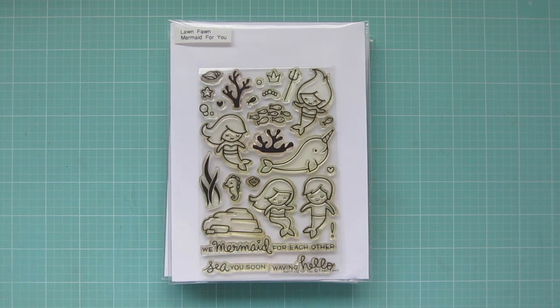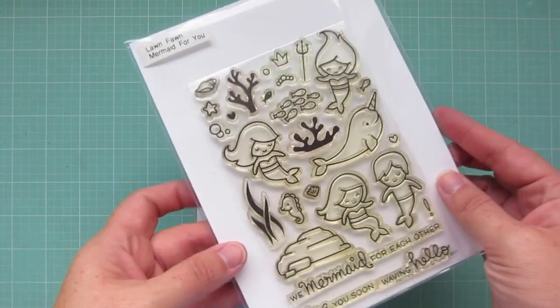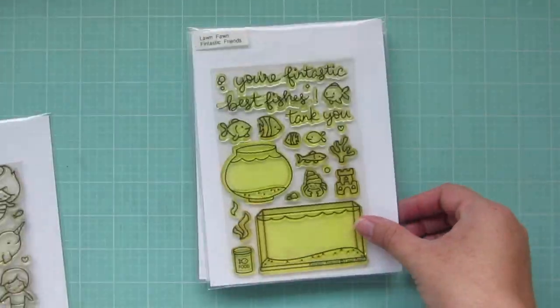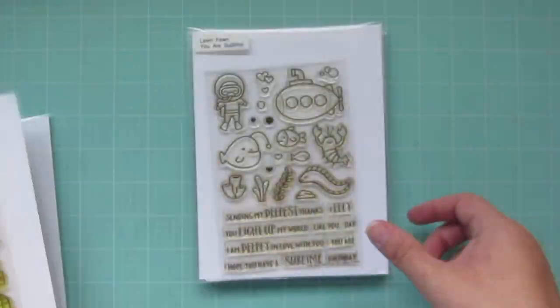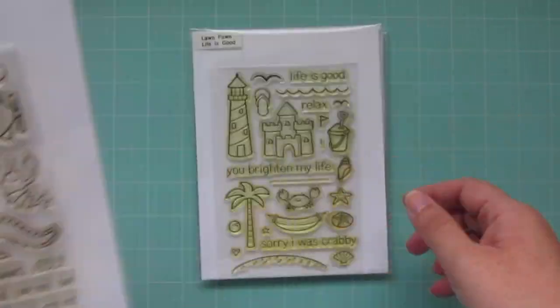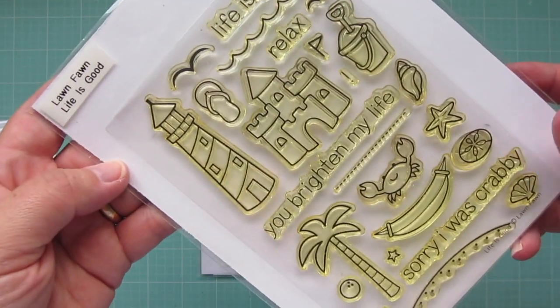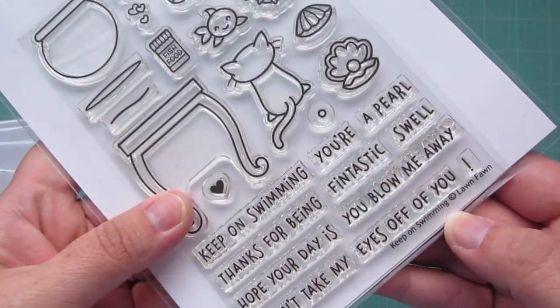Hey friends, it's Christy. Welcome back to my channel. Today I'm going to be making a magic picture changer card using several Lawn Fawn sets. I'm using Mermaid For You, Fintastic Friends, You Are Sublime, Life Is Good, and Keep On Swimming.